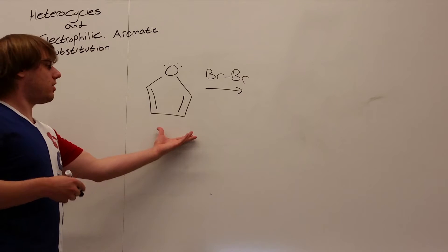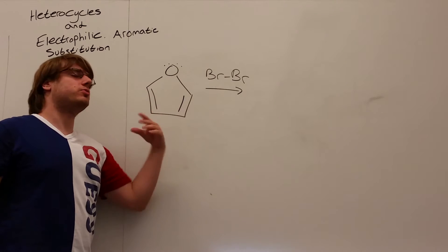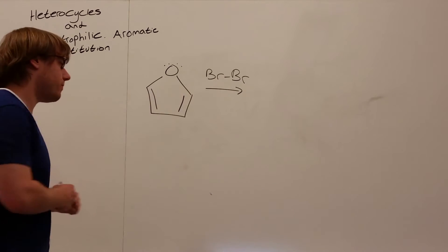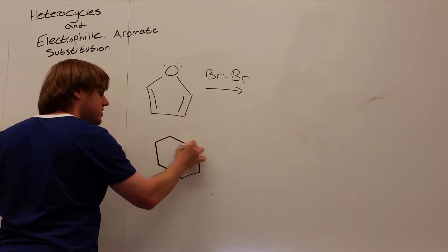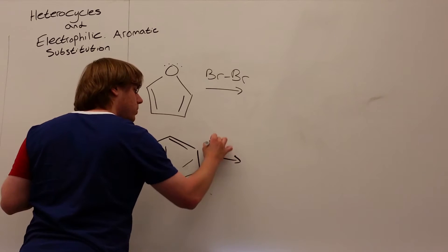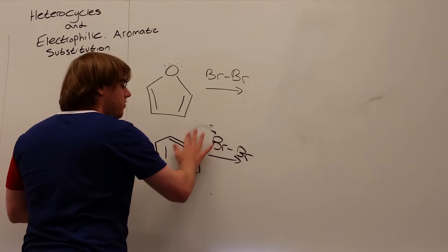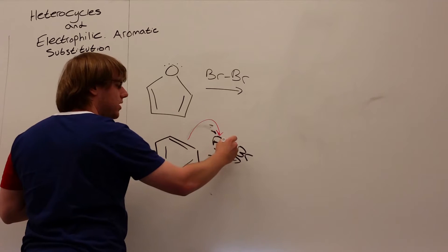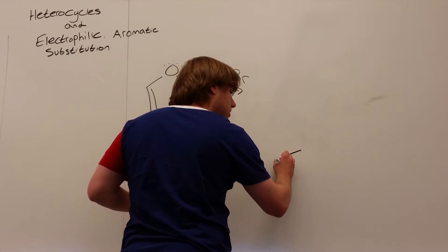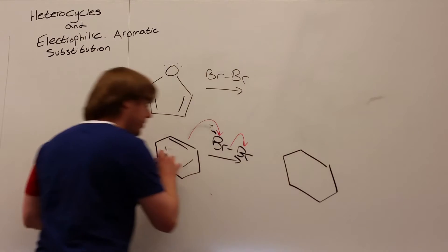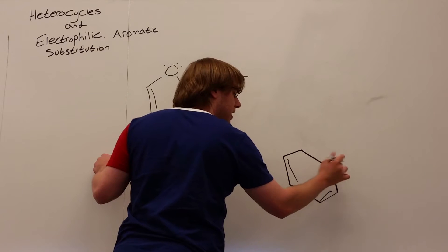Let's take this heterocycle and consider what's going to happen — how is this heterocycle going to attack Br2? It's comparable to what we saw with electrophilic aromatic substitutions on benzene. In those reactions, a double bond of the benzene went out and attacked the bromine, kicking the other bromine off as Br minus. What you get is the two uninvolved double bonds remaining the same, the attacking double bond gone, and a bromine added in its place.